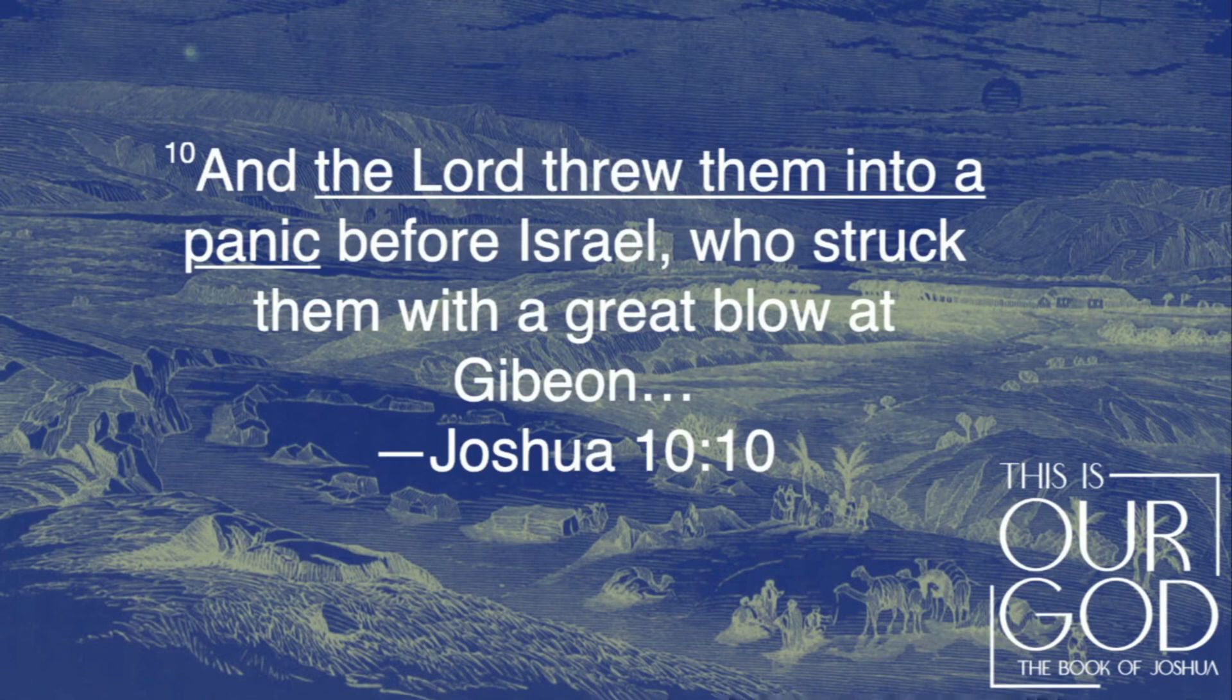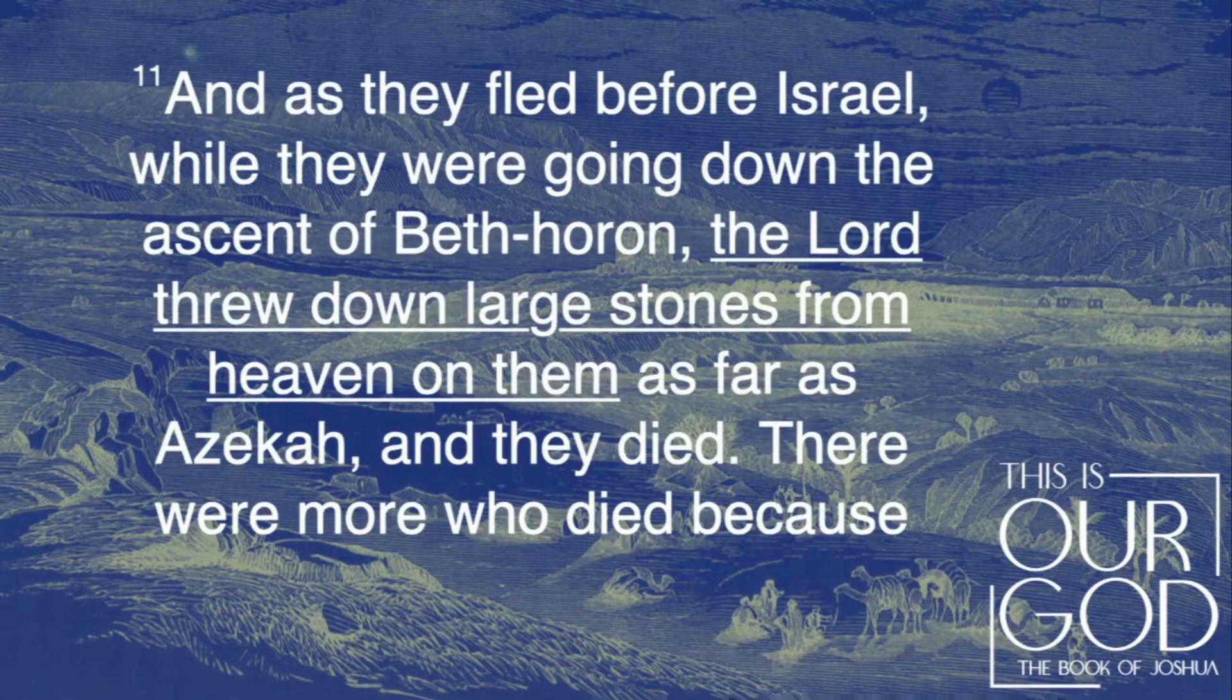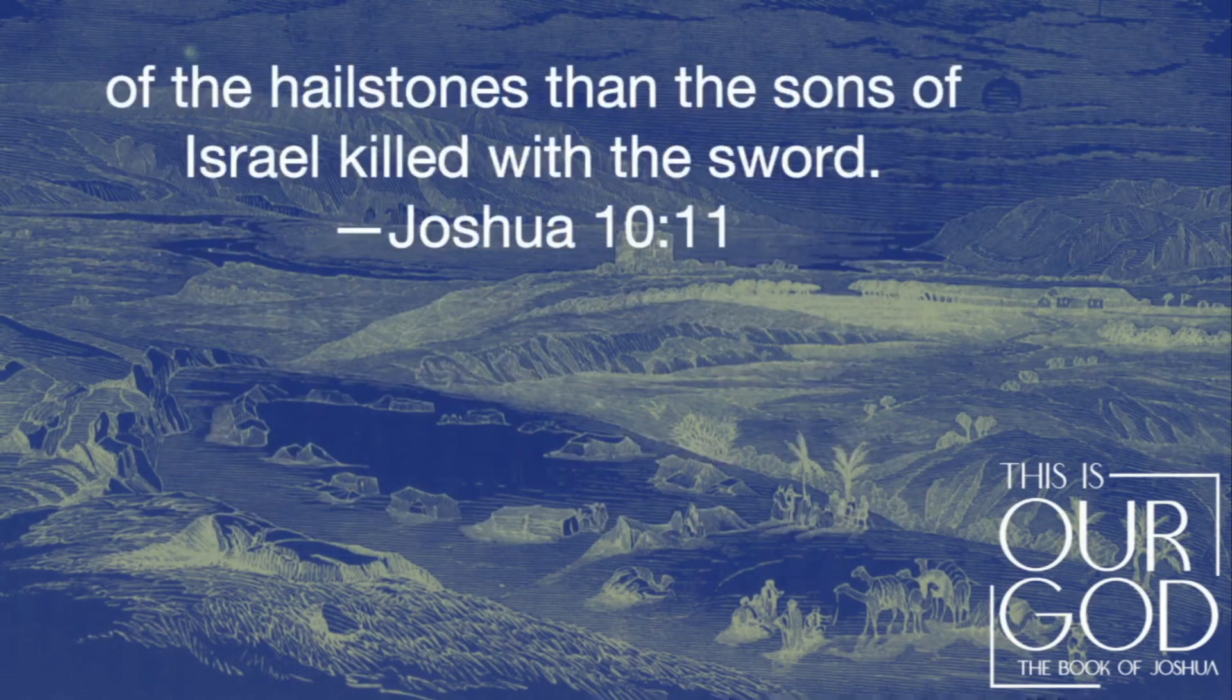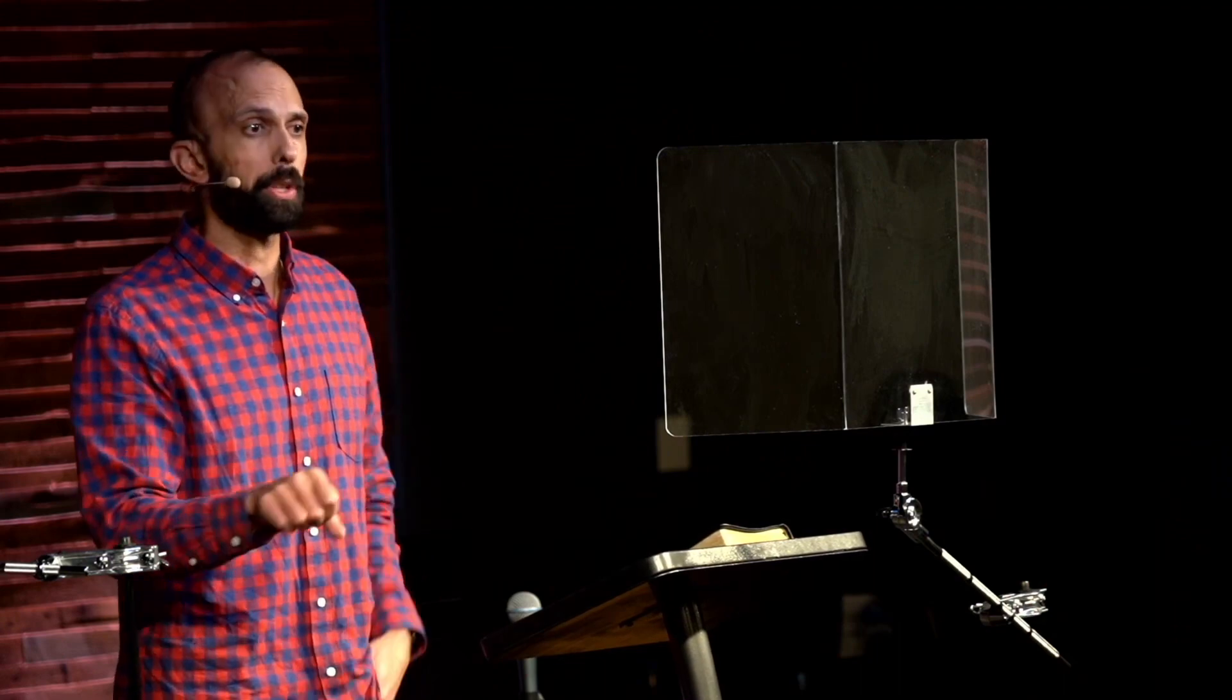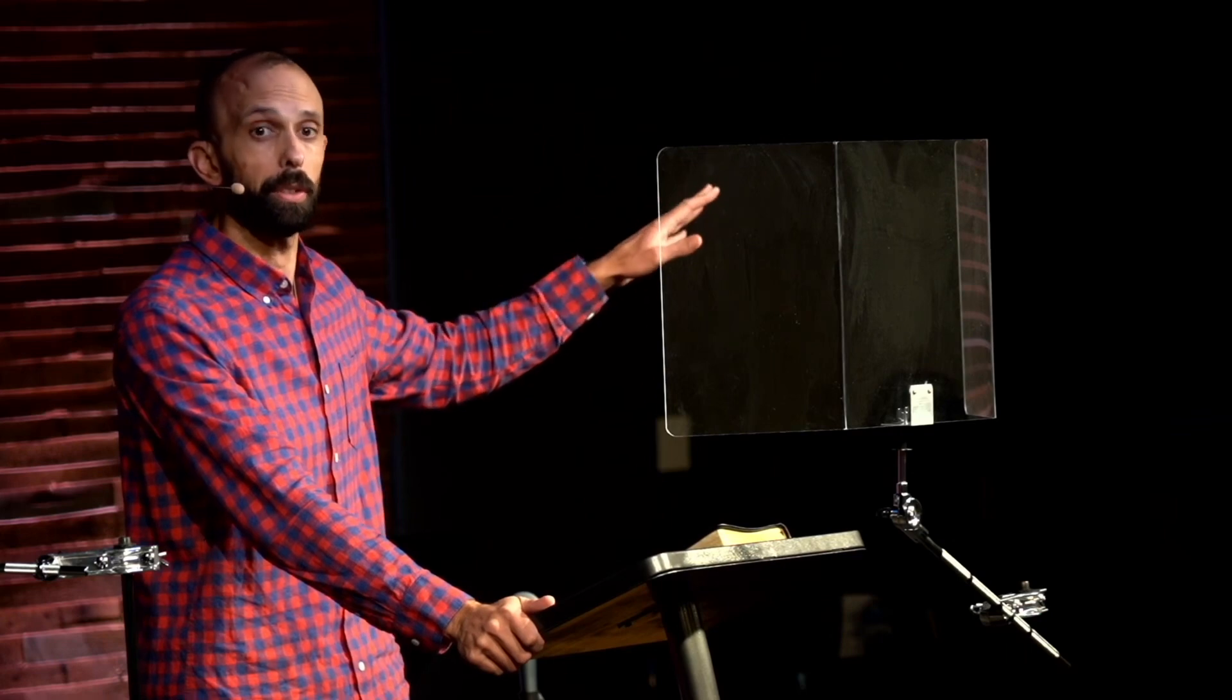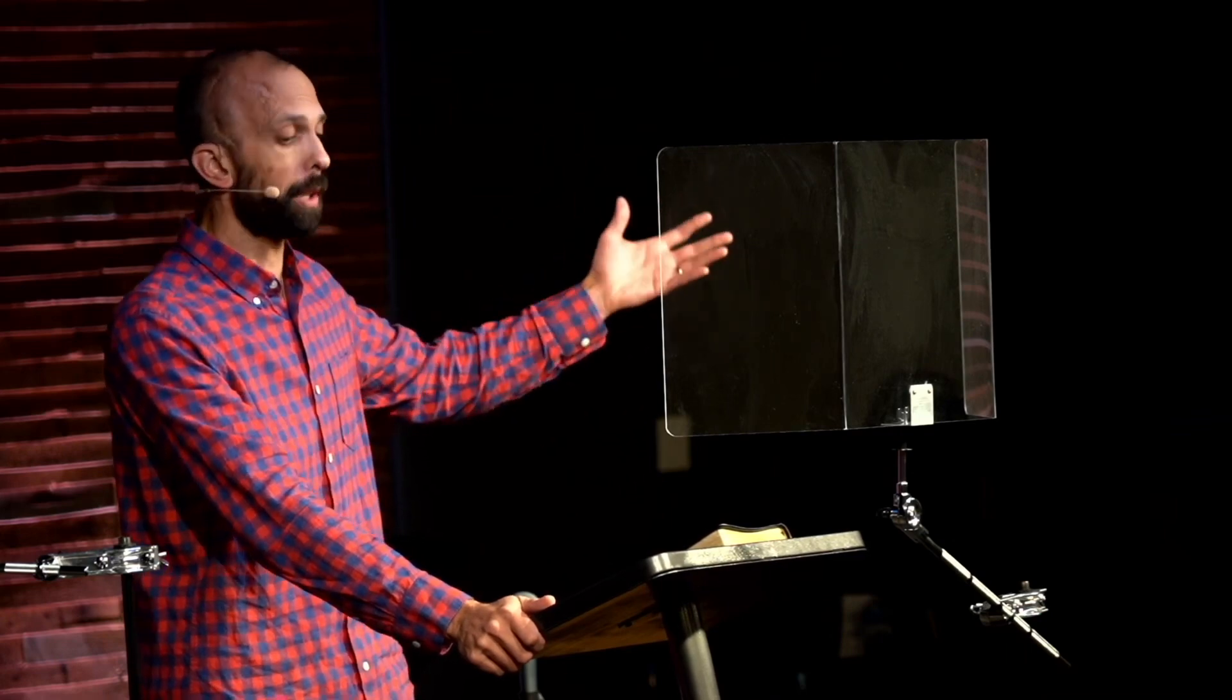And as they fled before Israel while they were going down the descent of Beth-horon, the Lord threw down large stones from heaven on them, hailstones, as far as Ezekiah, and they died. There were more who died because of the hailstones than the sons of Israel killed with the sword. So this is just an insane, crazy scene. The Lord is raining down from heaven these large hailstones that are killing off the Amorite army. God is clearly fighting for his people. But notice that Joshua doesn't put his sword back in his sheath and say, let's call it a day. You know what he actually does? He asks for a longer day so they can defeat their enemies.